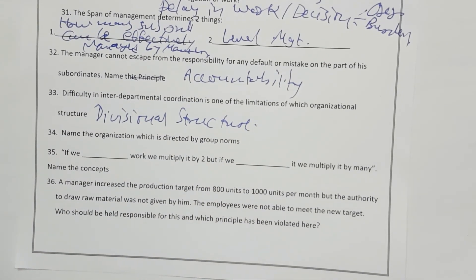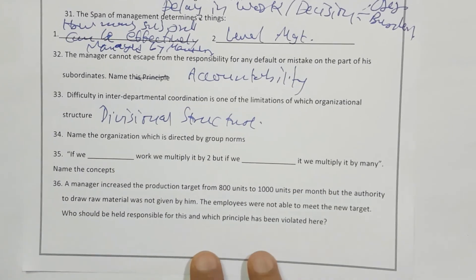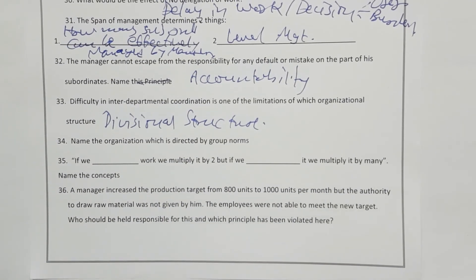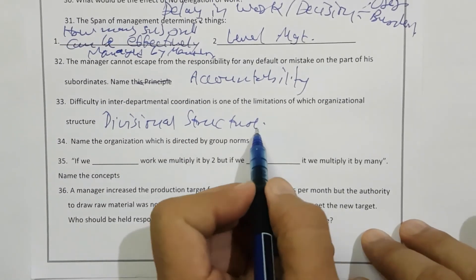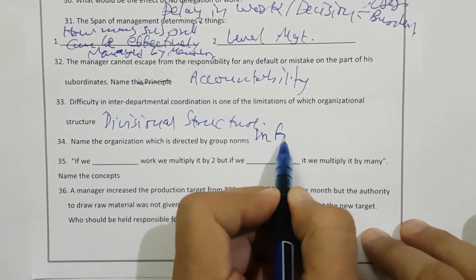Name the organization which is directed by group norms. They are not following organizational norms but group norms — so it is informal organization.